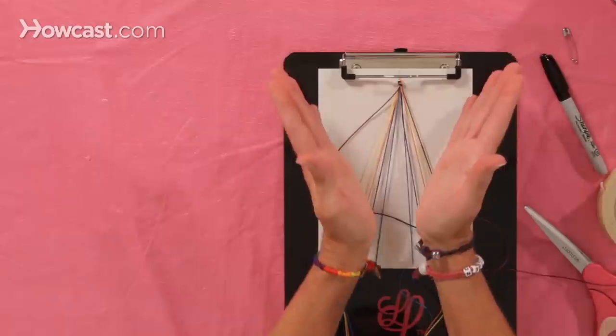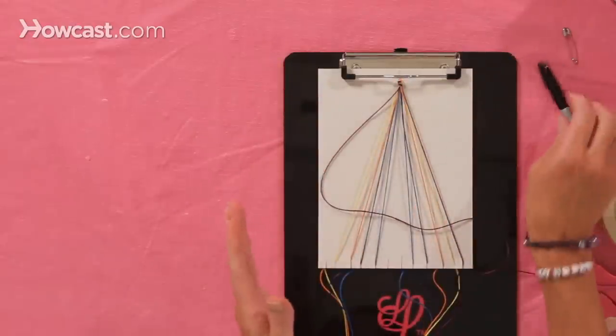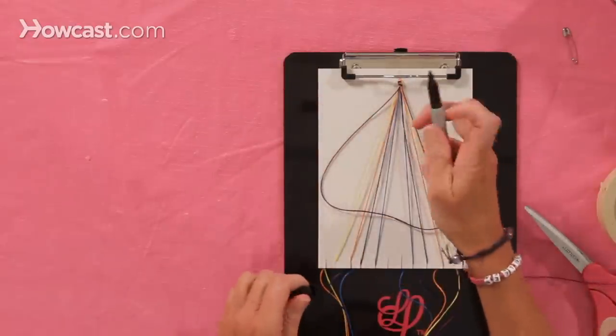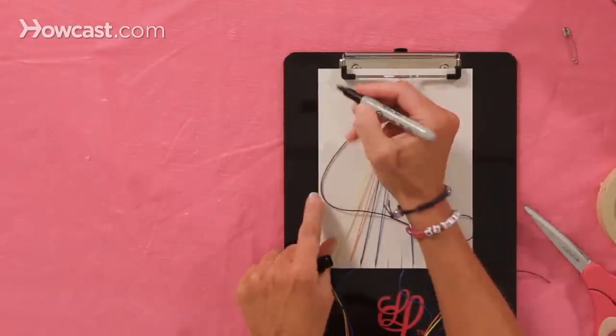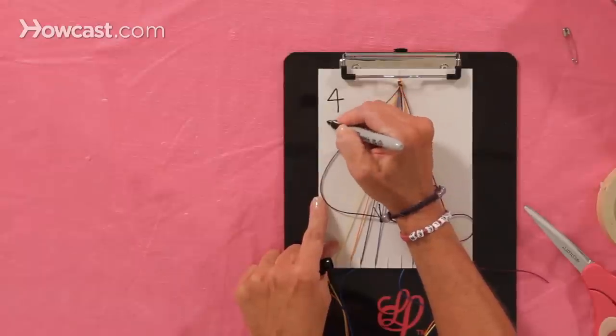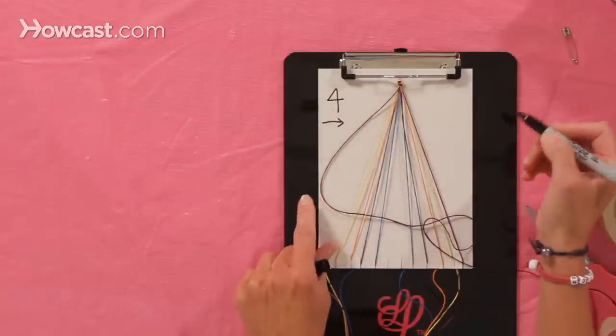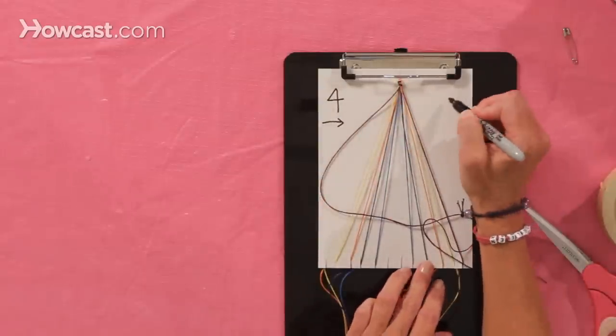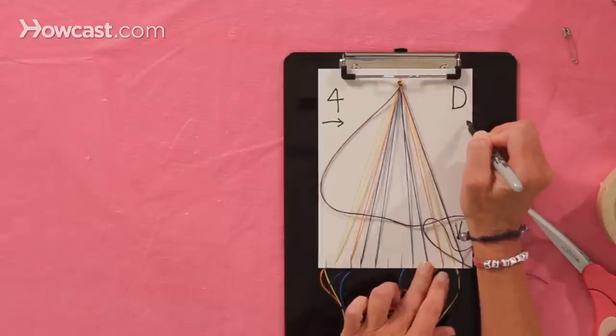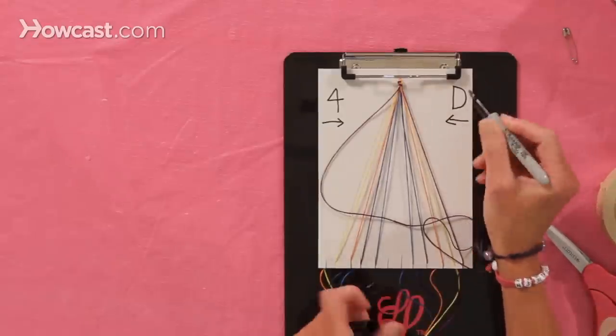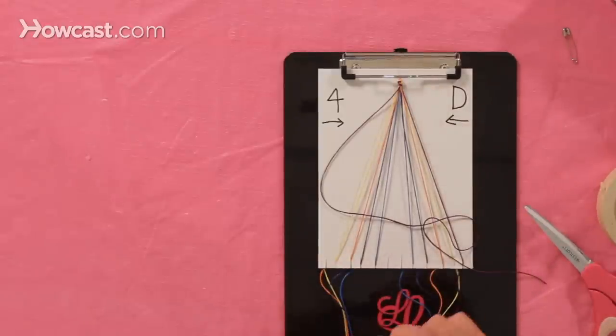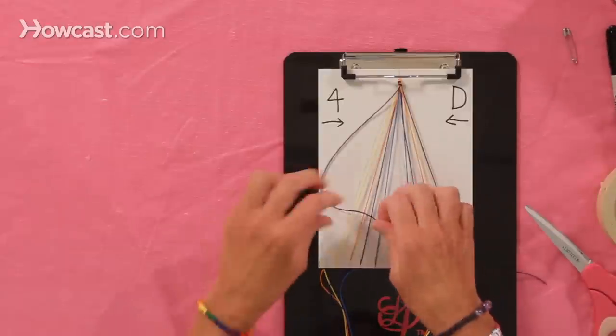This bracelet comes down and meets in the middle. So from the left, when we use the strings, we do the forward knot to the middle, in that direction, from left to right. Then when we come in from the right side, we're doing the backward knot, and we go from right to left. So this bracelet uses both the forward knot and the backward knot.